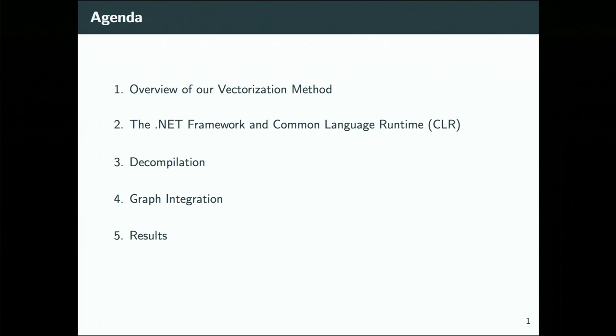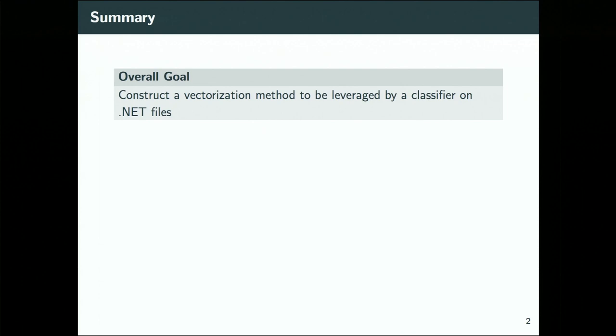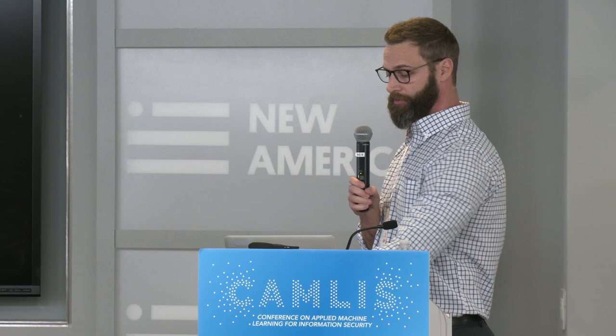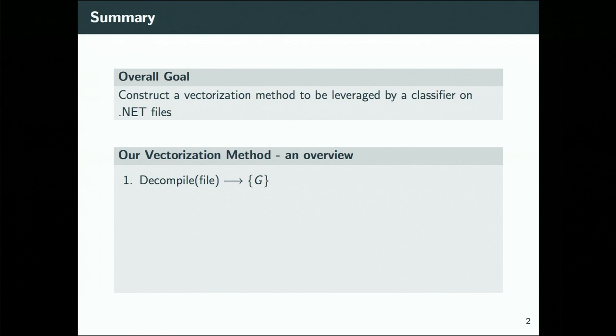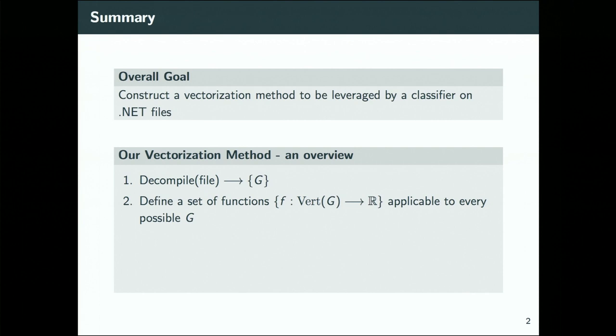An overview of the vectorization method: our overall goal is to construct a vectorization method to be leveraged by a classifier on .NET files — a benign/malicious two-class classifier. What we do first is decompile our file — again, always .NET — and this results in a set of graphs, which I'll describe in a bit. We then define a set of functions, not to be confused with the functions that constitute the file.